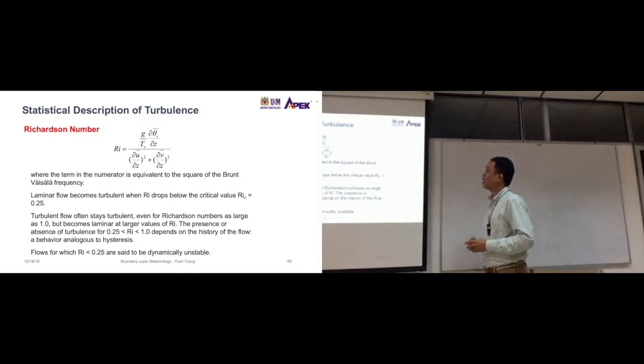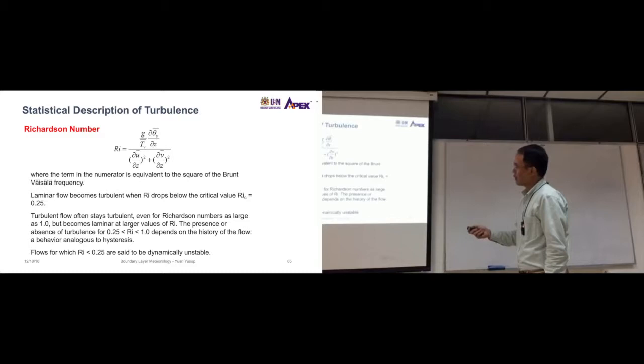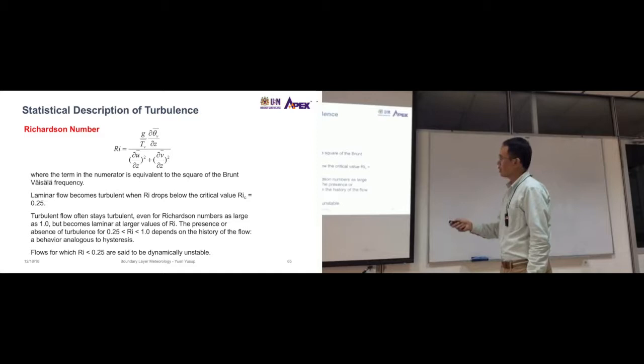So let's go into some values of ri. By the way, the term in the numerator, that means the one on top, is the square of the Brunt-Väisälä frequency. So we're not going to talk about this, but just know that this is the Brunt-Väisälä frequency.